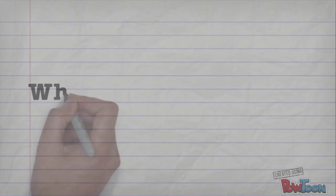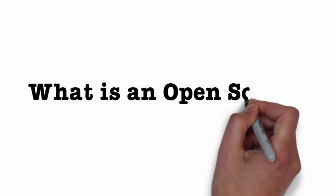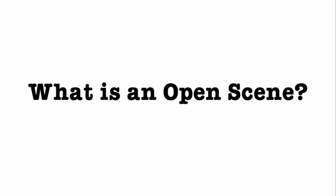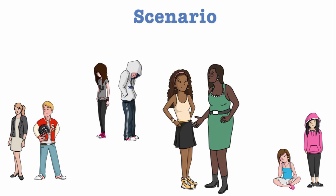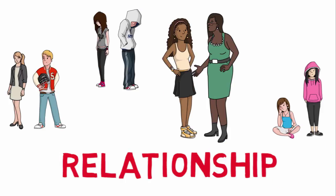On this episode of Be The Teacher, three tips for developing character relationships. On the last episode, we discussed open scenes and developing scenarios, and now we are going to build on that concept by talking about a topic that deserves its own video: relationship. I will use an article by Rob Adler, an onstage acting coach, to guide this discussion of relationship.